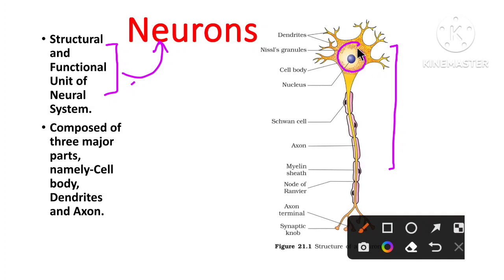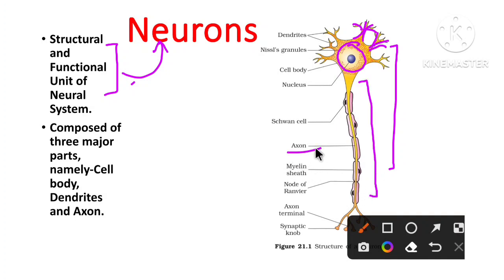The first part is what we know as the cell body. The branching structures coming out of the cell body we know as dendrites, and this long structure we know as the axon. So, cell body, dendrites, and axon — these are the three major important parts of the neuron.